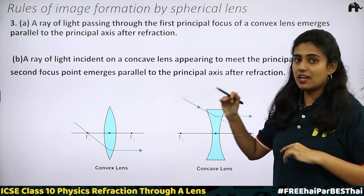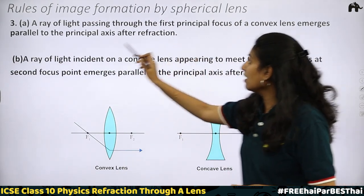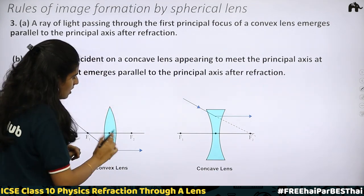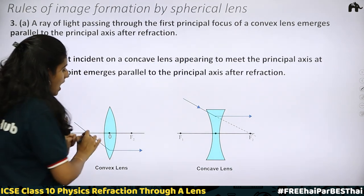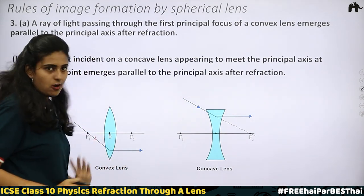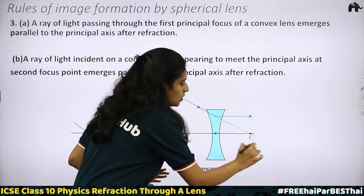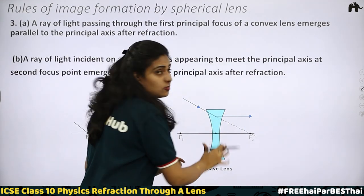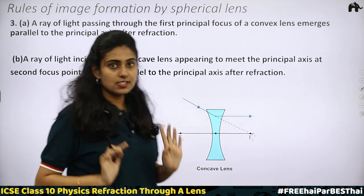The third rule is just the opposite of the second. In the second rule, the ray of light is parallel to the principal axis. Here, we have rays of light passing through the focus. A ray of light passing through the first principal focus F1 of a convex lens emerges parallel to the principal axis after refraction. For a concave lens, a ray pointing towards the principal focus, after refraction, will also move parallel to the principal axis.